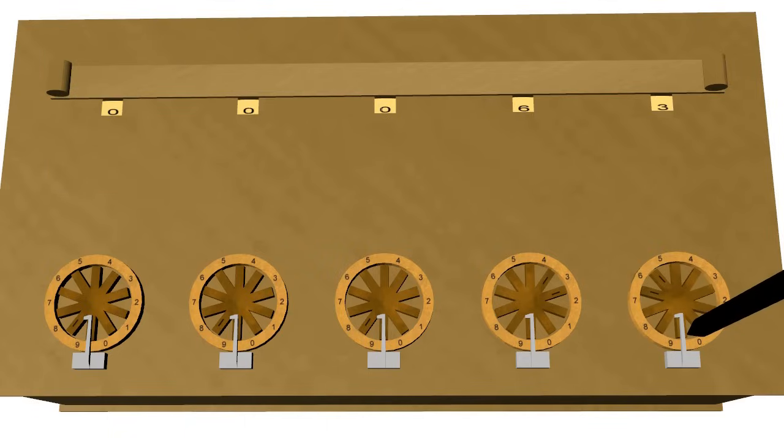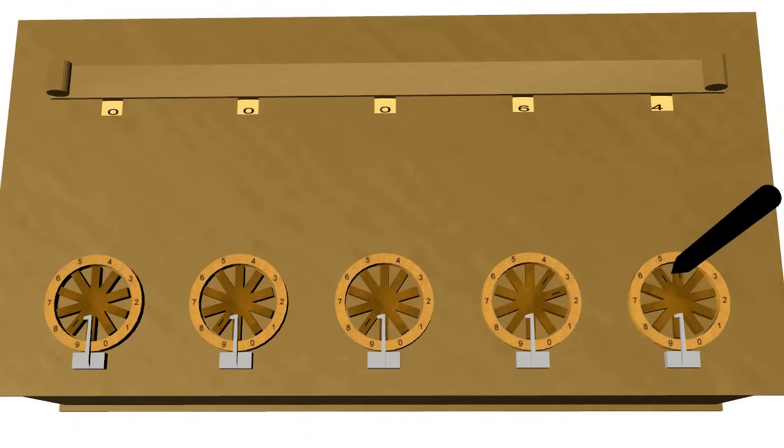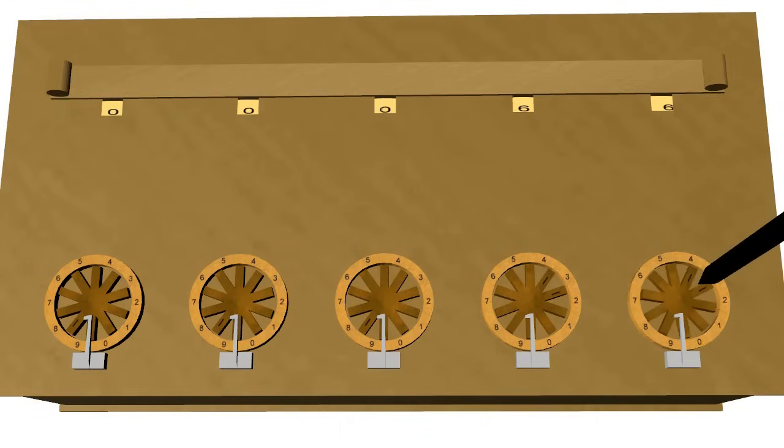The values stored in the Pascaline must be cleared before a new series of additions can be performed. Clearing is done by setting all the accumulators to nine and then adding one to the lowest order digit. Setting each accumulator to nine can be accomplished by inserting the stylus between two specially marked spokes and turning the input dial all the way to the metal stop.